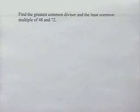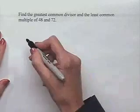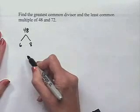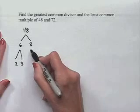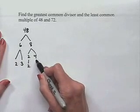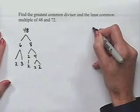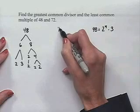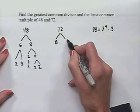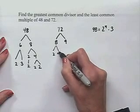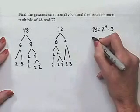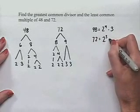Now let's look at a problem dealing with the greatest common divisor and least common multiple. Find the GCD and LCM of 48 and 72. We begin with the prime factorization of 48 using a factor tree: 48 equals 6 times 8; 6 factors as 2 times 3; 8 factors as 2 times 4, and 4 is 2 times 2. So 48 equals 2 to the 4th power times 3. Next, 72 equals 8 times 9; 8 is 2 times 4, and 4 is 2 times 2; 9 is 3 times 3. So 72 equals 2 cubed times 3 squared.